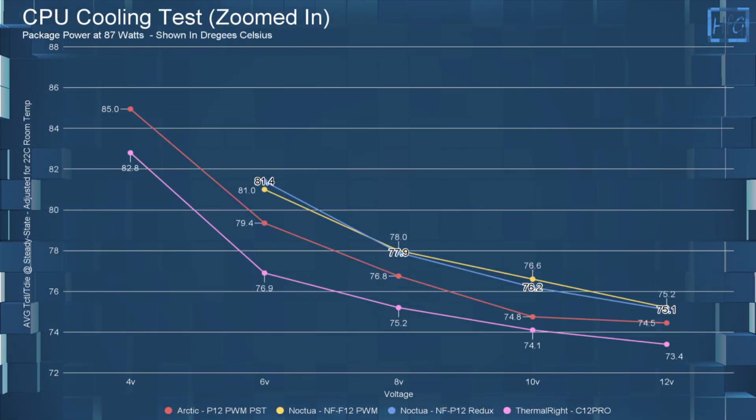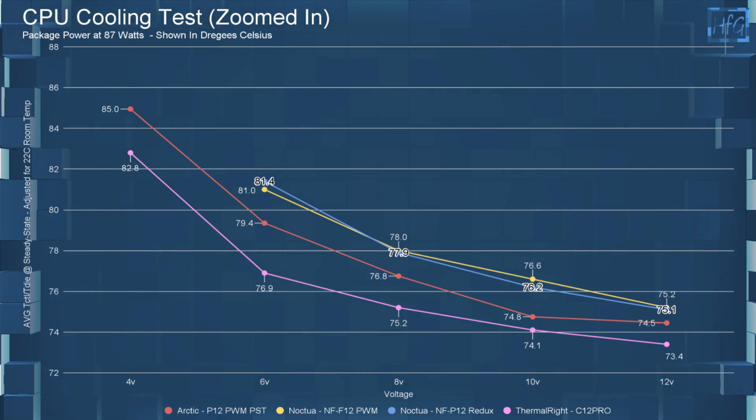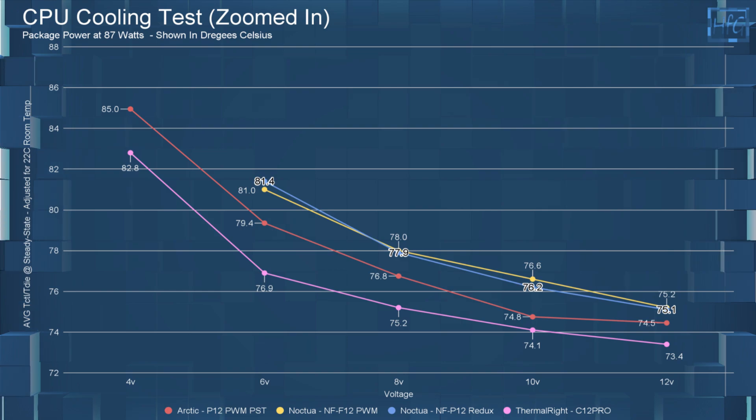Moving on to the CPU cooling testing. At 8, 10, and 12 volts, all these fans perform well, which is to be expected. But the NF-F12 and the NF-P12 do have the highest average CPU temperatures at each voltage.